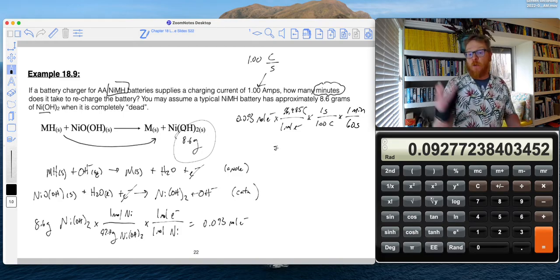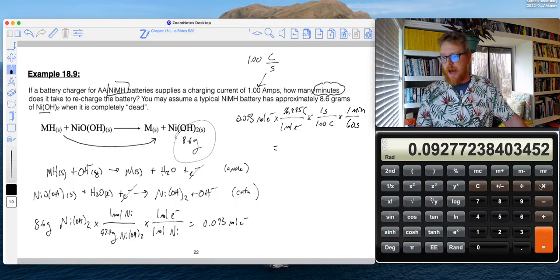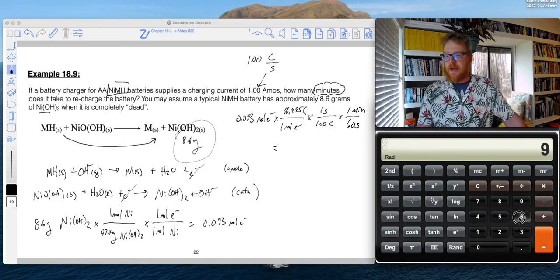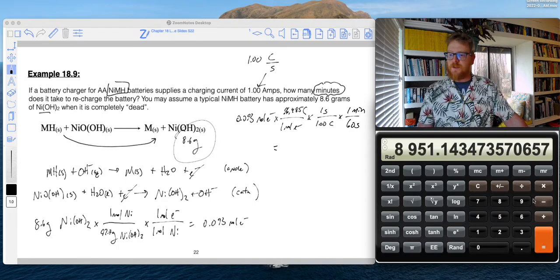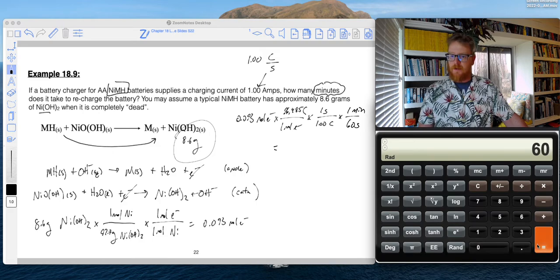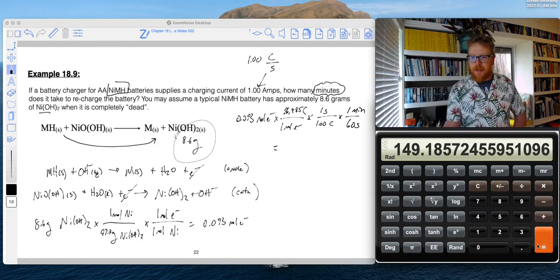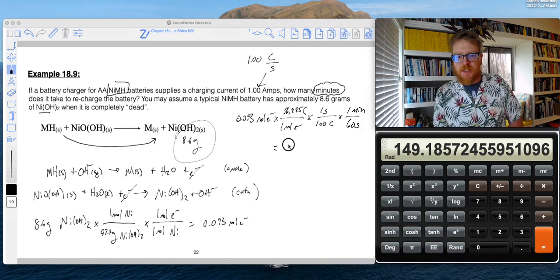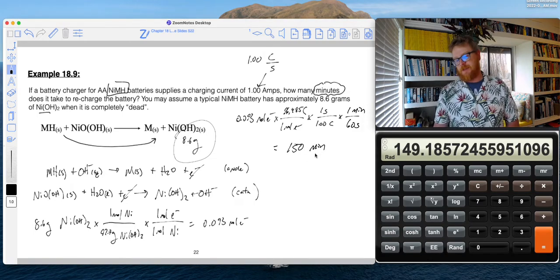And then now that will give me how long it'll take to charge my battery. So I can say times 96,485 equals and then divided by 60. And so I get with two significant digits, 150 minutes.